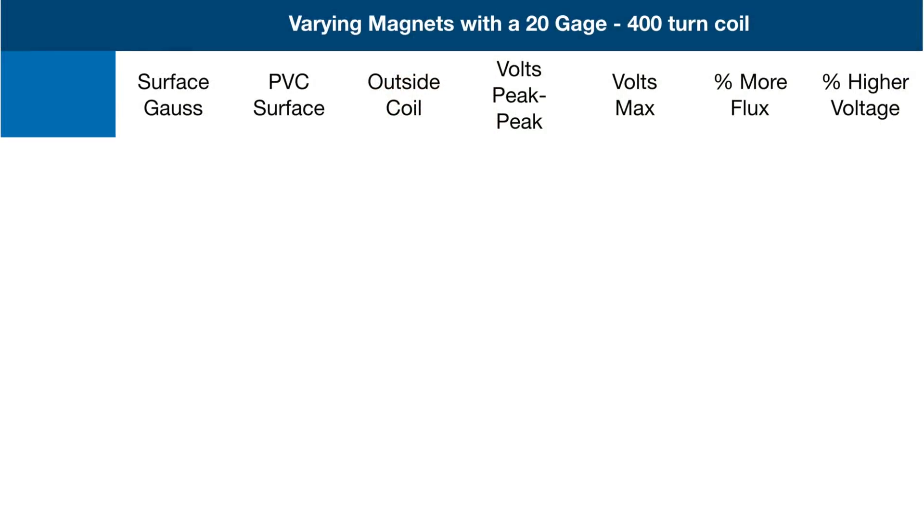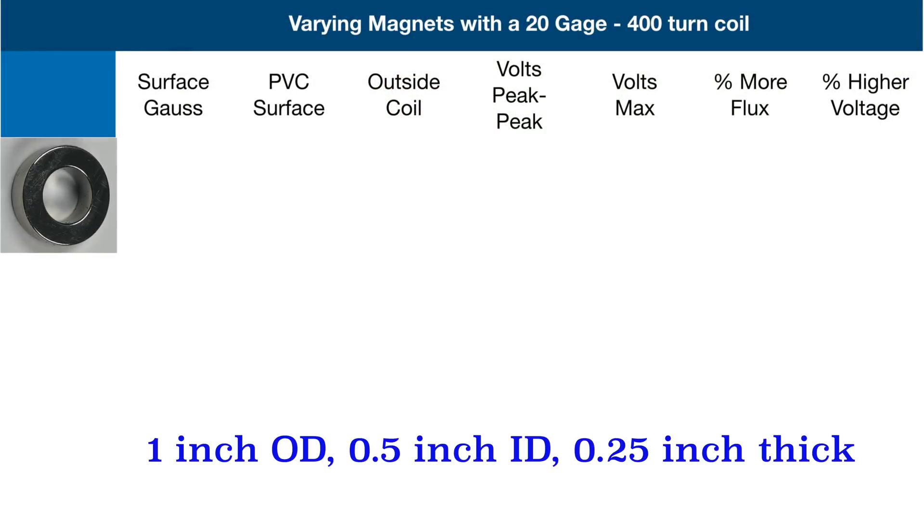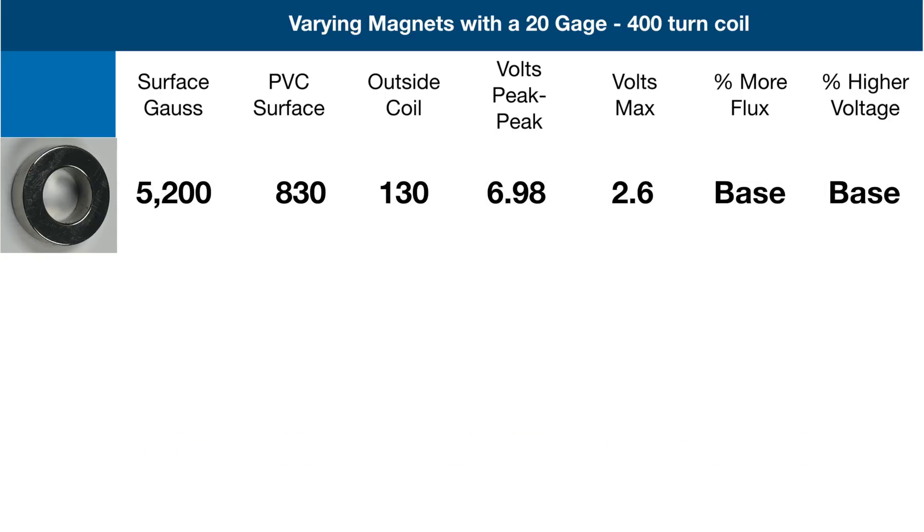Now let's summarize our data. Our smallest magnet was the ring magnet and it's going to serve as our base for comparison. As we look at the data, the key thing that stands out is we have 830 gauss on the surface of the pipe, which is the inside of our coil, and it is producing 6.98 volts peak to peak open circuit.